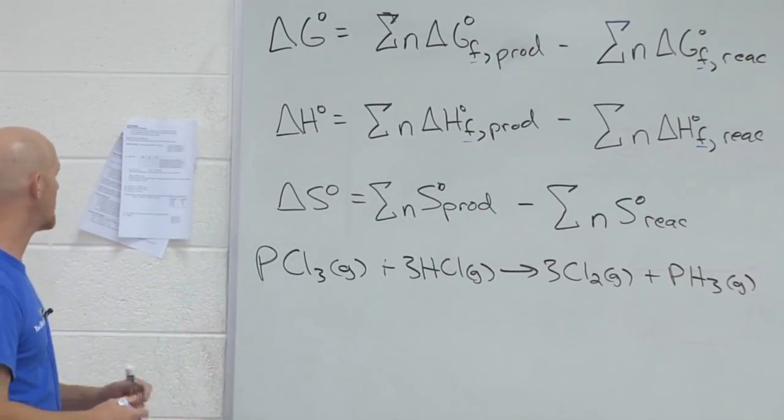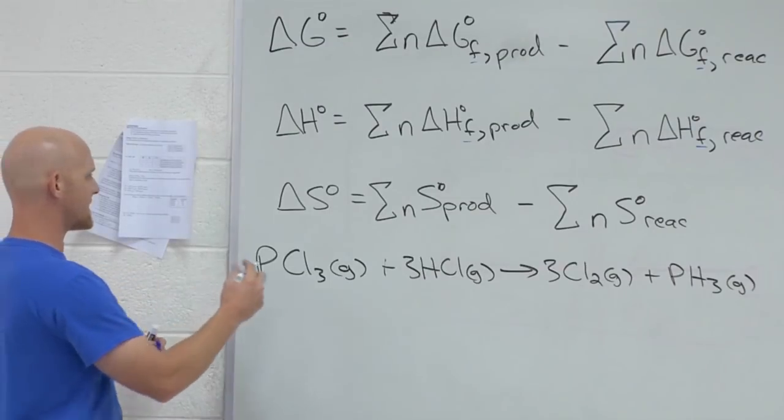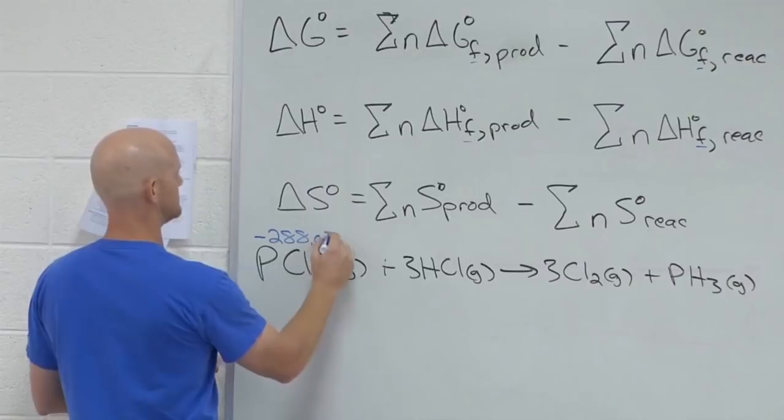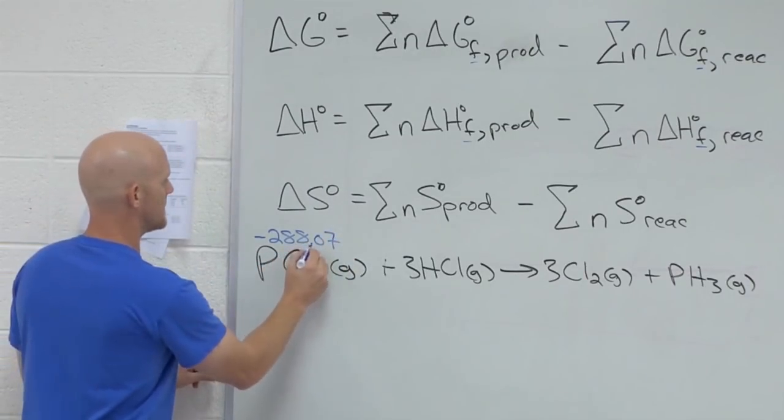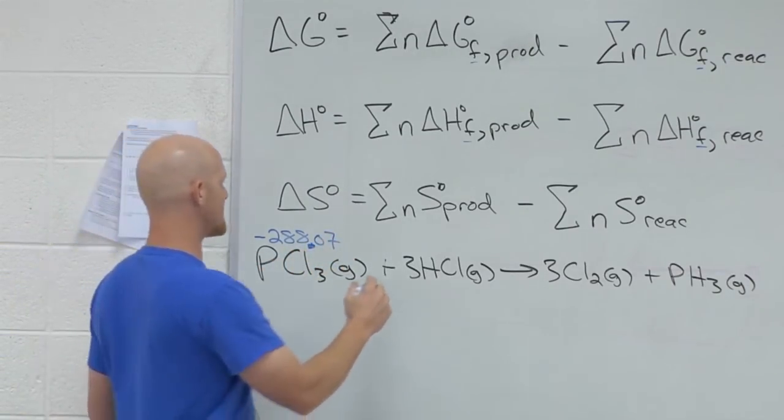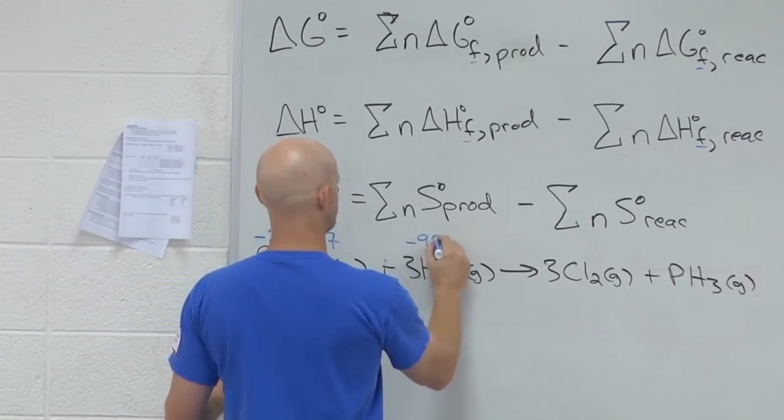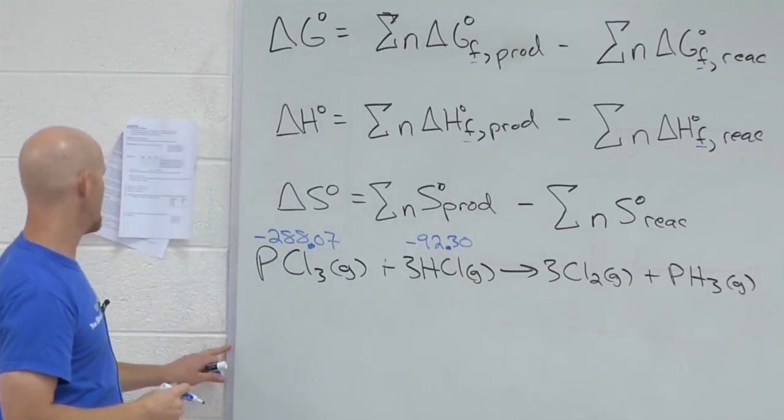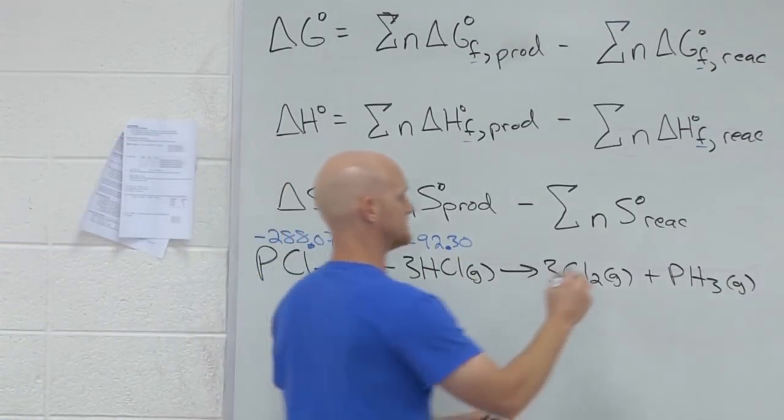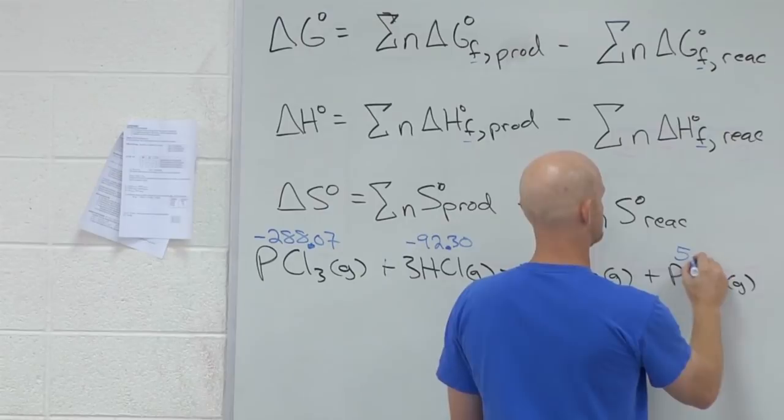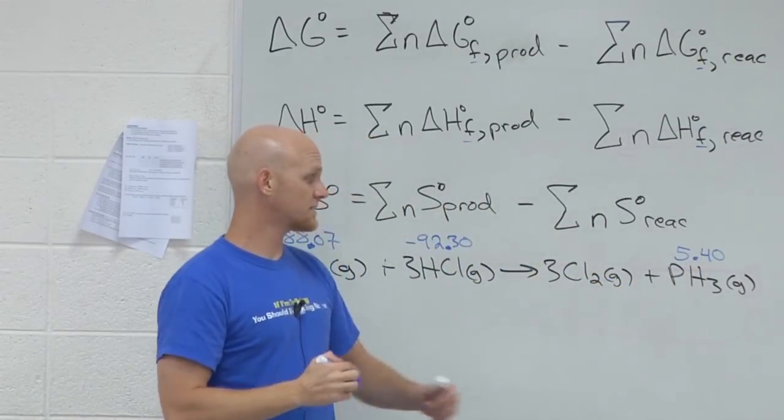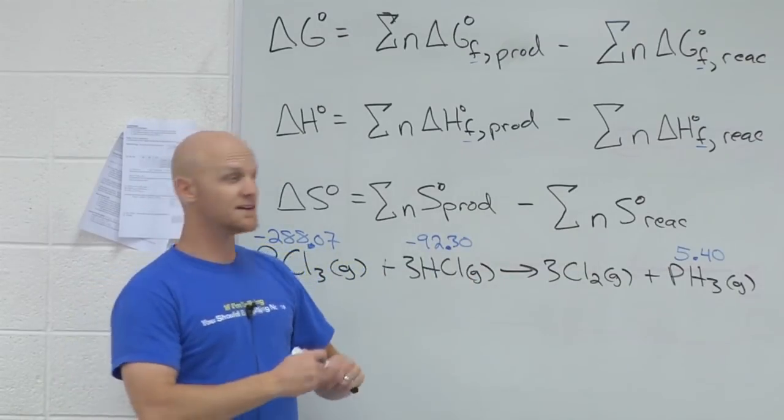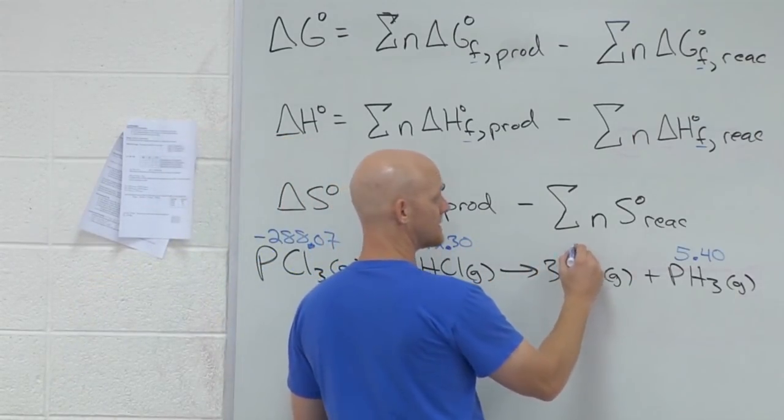Of formation. In a table, what was the delta H of formation for PCl3 gas given as? Good. Negative 288.07 kilojoules. What's the delta H of formation for HCl? Good. Negative 92.30 kilojoules. For PH3? 5.40 kilojoules. Notice it wasn't given for Cl2. And what you're supposed to remember is that Cl2's value is? Zero.